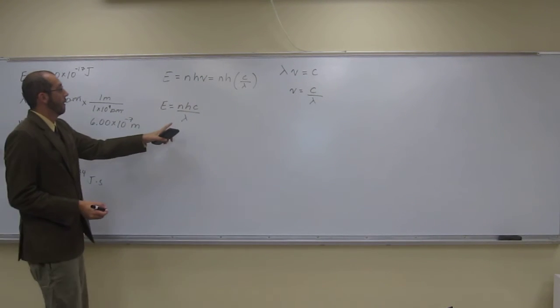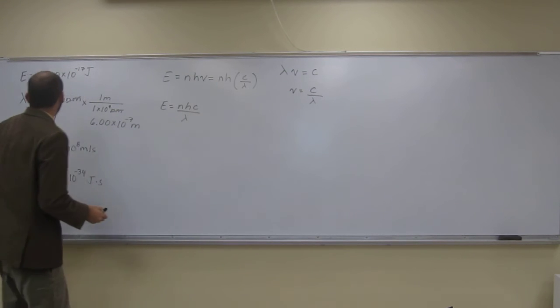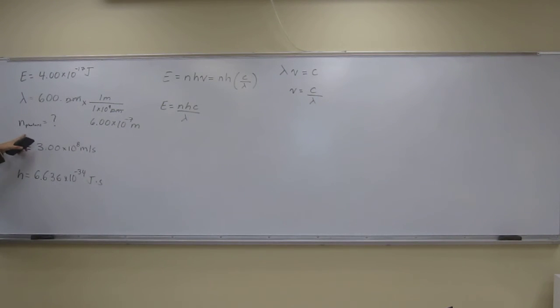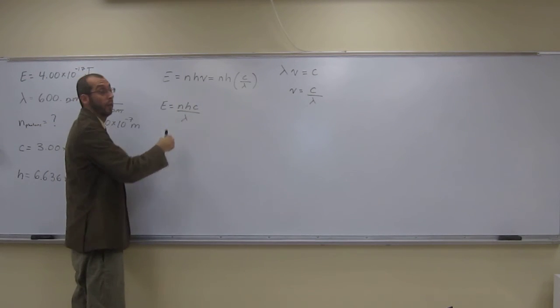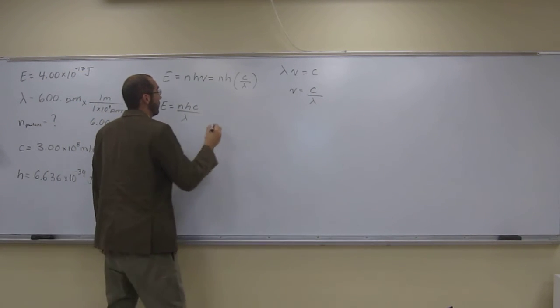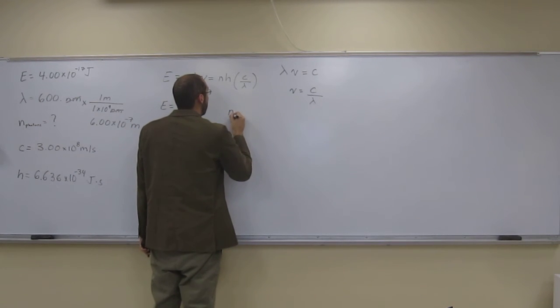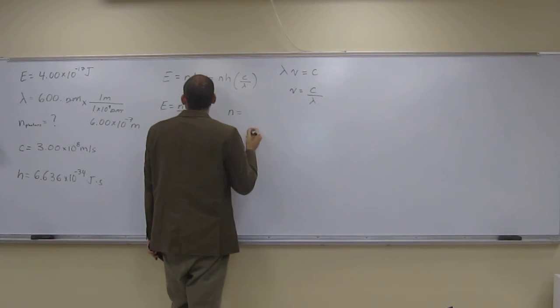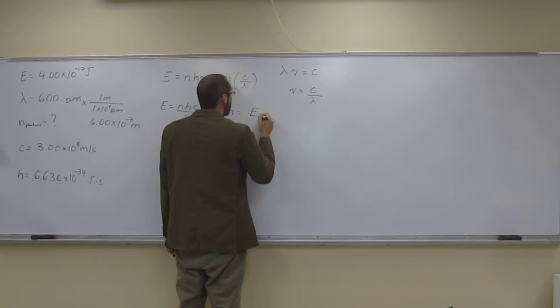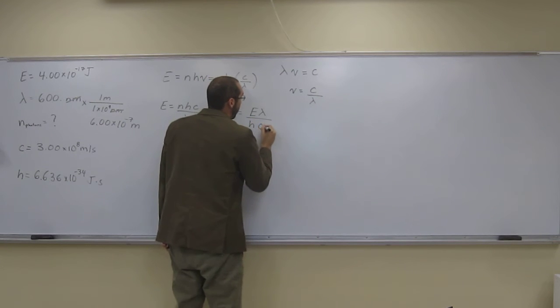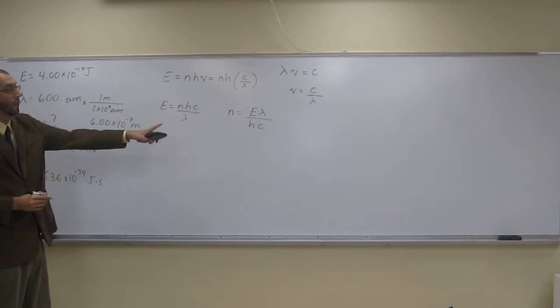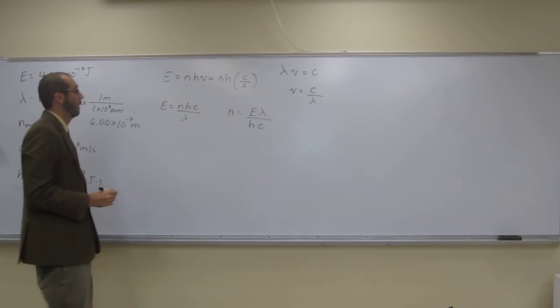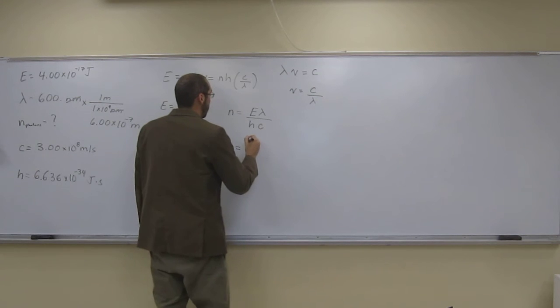So, now let's rearrange this equation. Because what are we looking for? We're looking for n here. Okay? So, we've got to rearrange this equation to be solving for n. So, let's do that. N equals E lambda divided by h c. Like that. Okay? So, n is the number of photons.